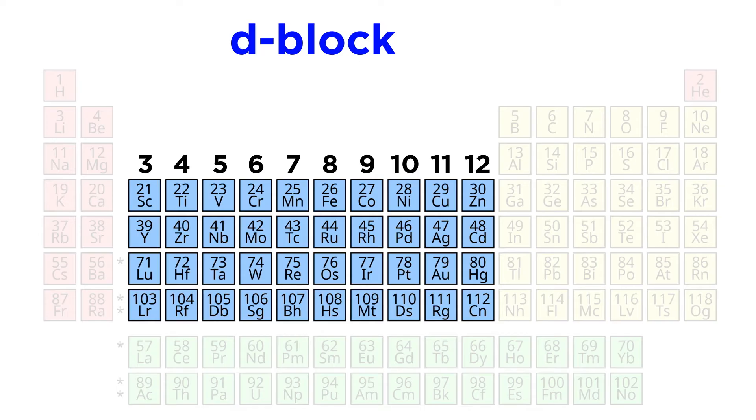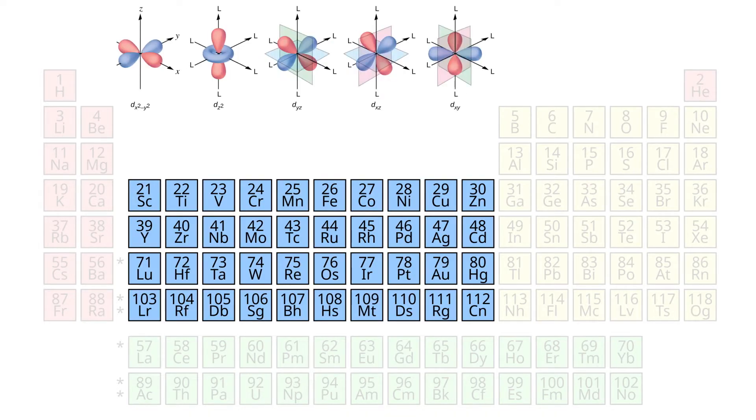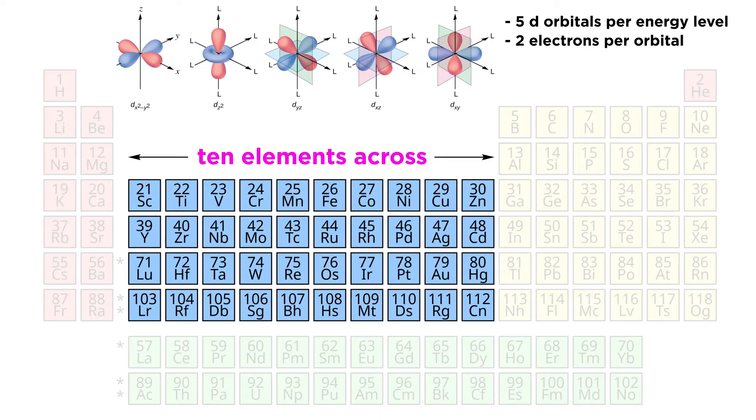The D block, which contains groups 3 through 12, are elements whose outermost electrons are D electrons. We should remember what D orbitals look like from general chemistry, and because there are 5 per energy level, the D block is 10 elements across.